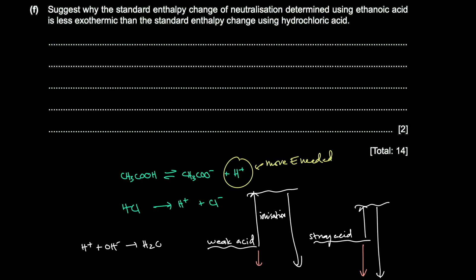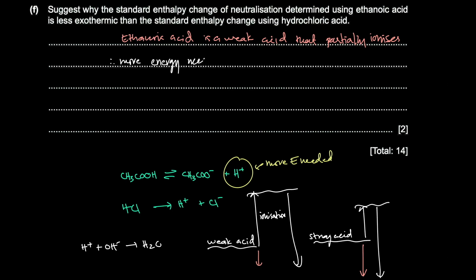In summary: ethanoic acid is a weak acid that partially ionizes, and more energy is needed for it to dissociate, resulting in a less exothermic net enthalpy change of neutralization.